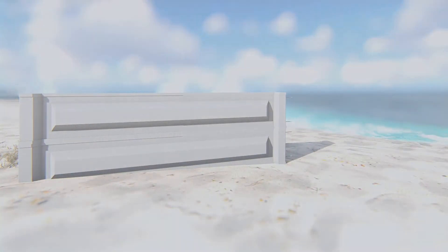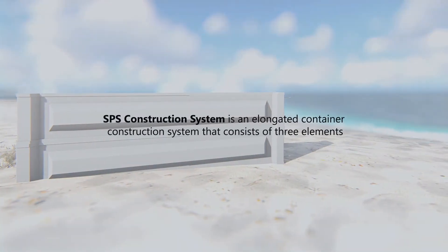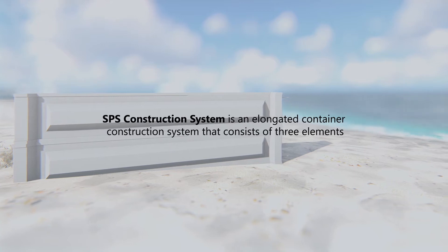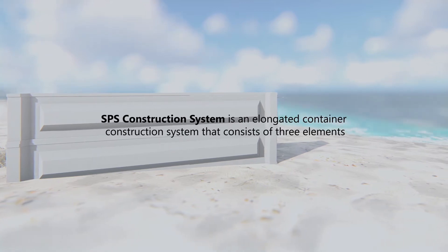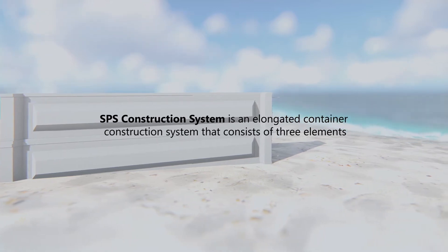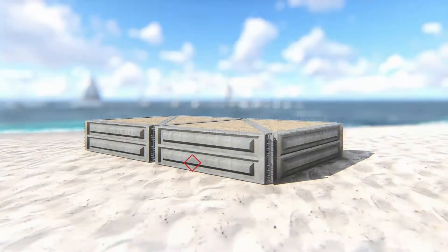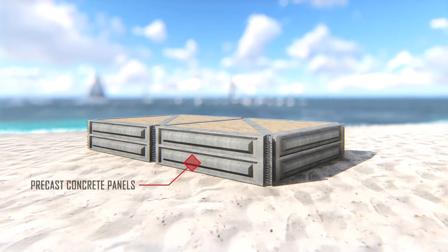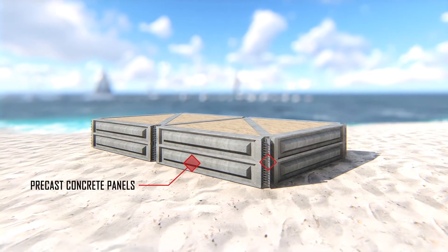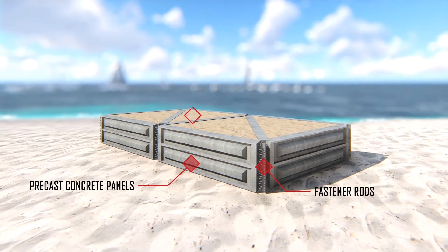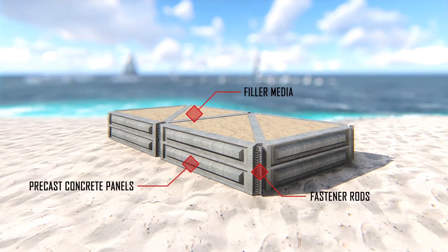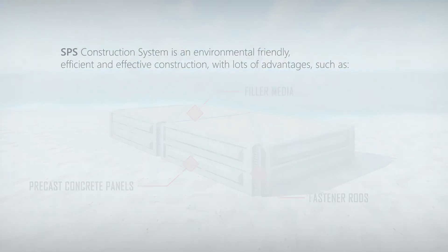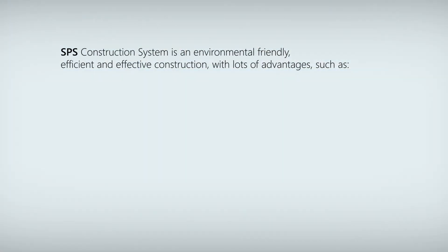SPS Construction System is an elongated container construction system that consists of three elements: precast concrete panels, fastener rods, and filler media. SPS Construction System is an environmentally friendly, efficient, and effective construction system with a lot of advantages.